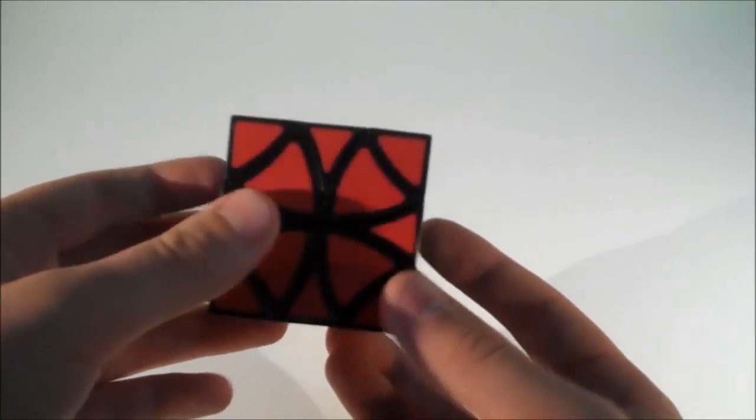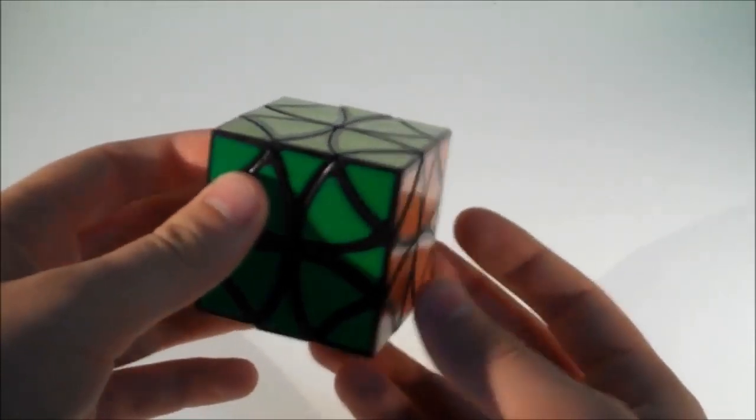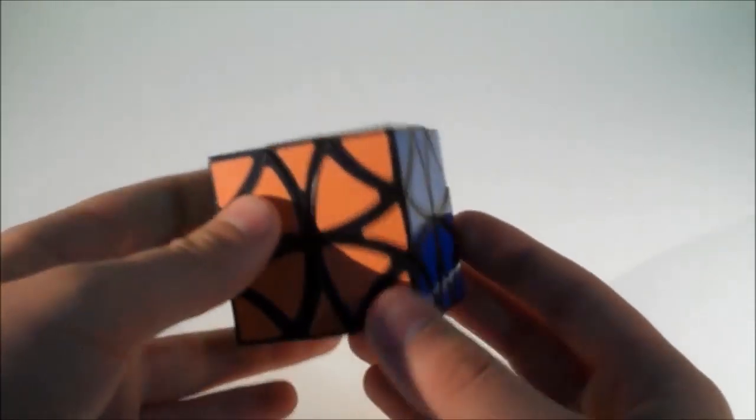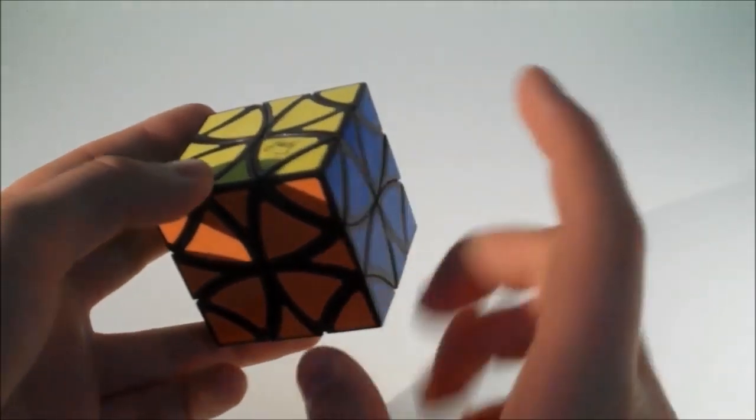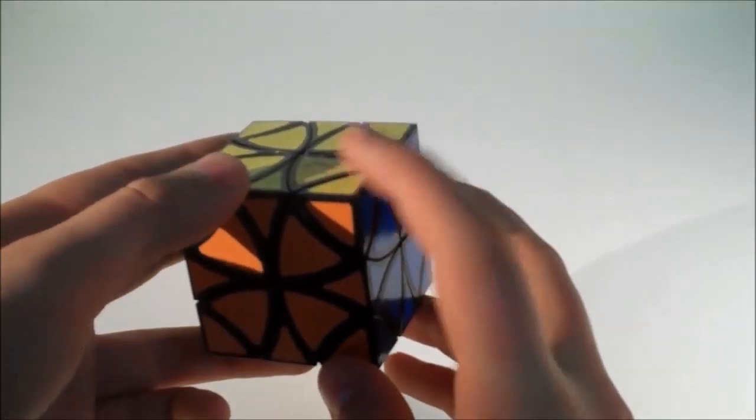Well as you can see, we have stickers on this puzzle. Six different colours for six different faces. So I see this corner here, the yellow, orange and blue.